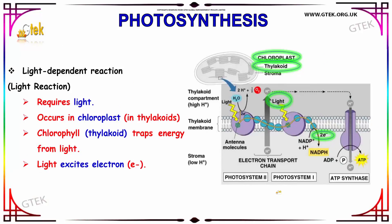Now we are going to see even more about the light-dependent reaction. In the light-dependent reaction, it requires light, it occurs in the chloroplast — that is the thylakoid. The chlorophyll traps energy from light. The thylakoid is the chlorophyll, and finally the light excites the electrons. The light is absorbed by the thylakoid and finally the electron is emitted.